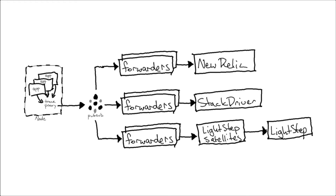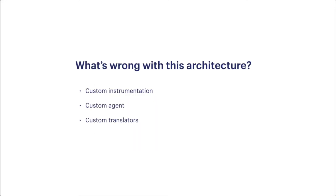We tried Zipkin, Jaeger, New Relic's tracing service, SignalFx, LightStep, and Omnition alongside Stackdriver. So this was all pretty cool — it gave us a ton of flexibility, and if you squint, it doesn't look a whole lot different from OpenTelemetry's architecture or Jaeger's architecture. The one thing that should jump out at you right away is that it is all custom. We had to maintain our own instrumentation, our own agent, our own translators, and we had to manage and scale this thing as our platform and company grew.